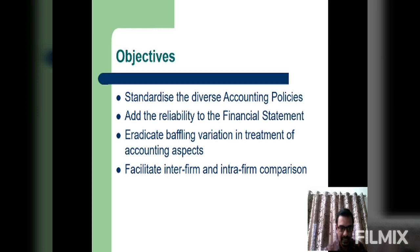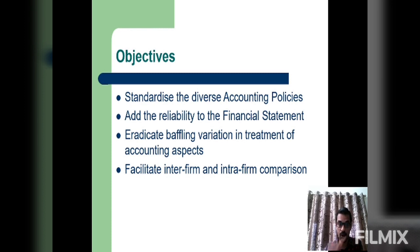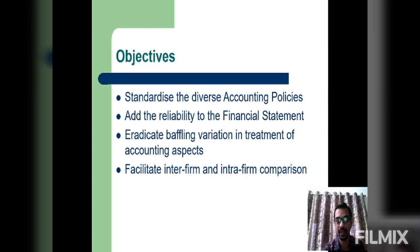The fourth objective is to facilitate inter-firm and intra-firm comparison. Accounting Standards are designed for this purpose as well. It is necessary for every business organization to assess their financial performance. Therefore, it is necessary to compare their performance with other companies — this is called inter-firm comparison — and to compare the performance of their own various departments — that is called intra-firm comparison.